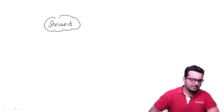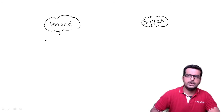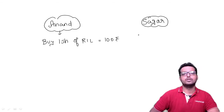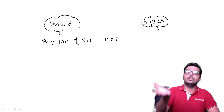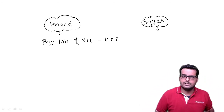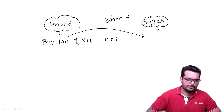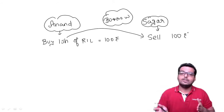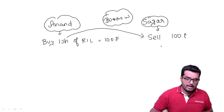Let us take two people. The first one is Anand, and the second is Sagar. Anand is holding a share — he has already bought one share of Reliance for 100 rupees. Sagar has not bought any share. Anand is very optimistic and feels the price will go up, whereas Sagar feels the price is going to fall. They come to a consensus: Sagar will borrow the share from Anand and sell it at 100 rupees, with a promise that after one year he will give the share back.